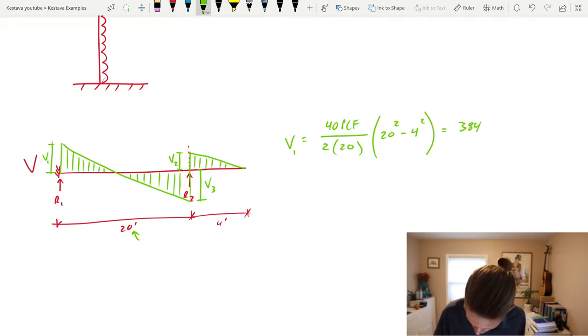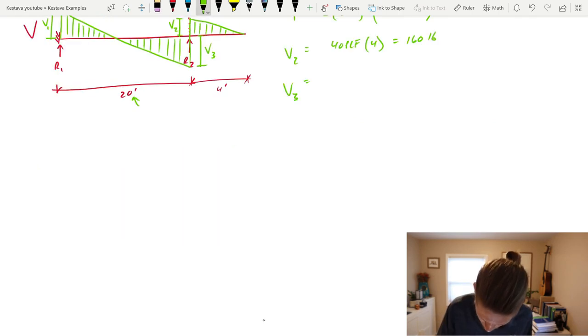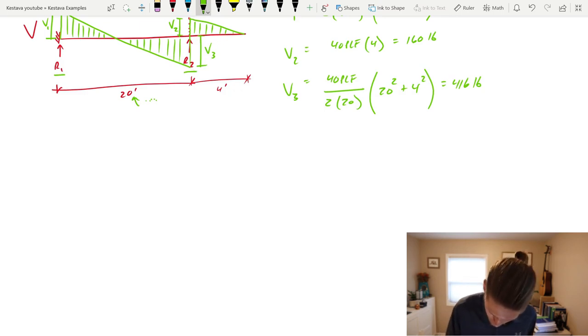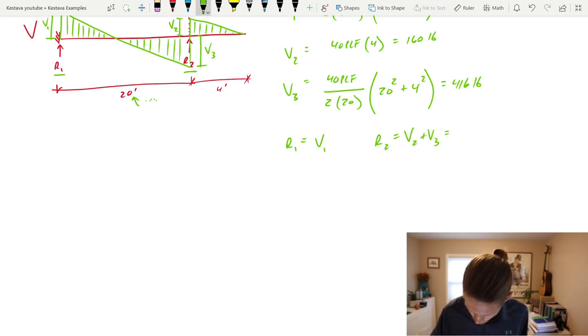V1 is going to be equal to 40 PLF. So, that's your distributed load. Divided by 2 times 20, which is this distance right here. All of that multiplied by 20. Again, that's that same distance. Minus the distance of the cantilever, or our parapet in this case, which is 4 feet squared. All of that equals 348 pounds. Next, we'll find V2. V2 is just equal to 40 PLF. Again, your distributed load. Times your parapet length, which is 4 feet. That gets you 160 pounds. And then, V3, I'm going to slide this down a little bit, is equal to 40 PLF. Again, distributed load. Divided by 2 times 20. Again, that's that dimension right over here. Times, parenthesis, 20 feet squared, plus the distance of your parapet, or your propped cantilever, which is 4 feet. That's going to get us 416 pounds.